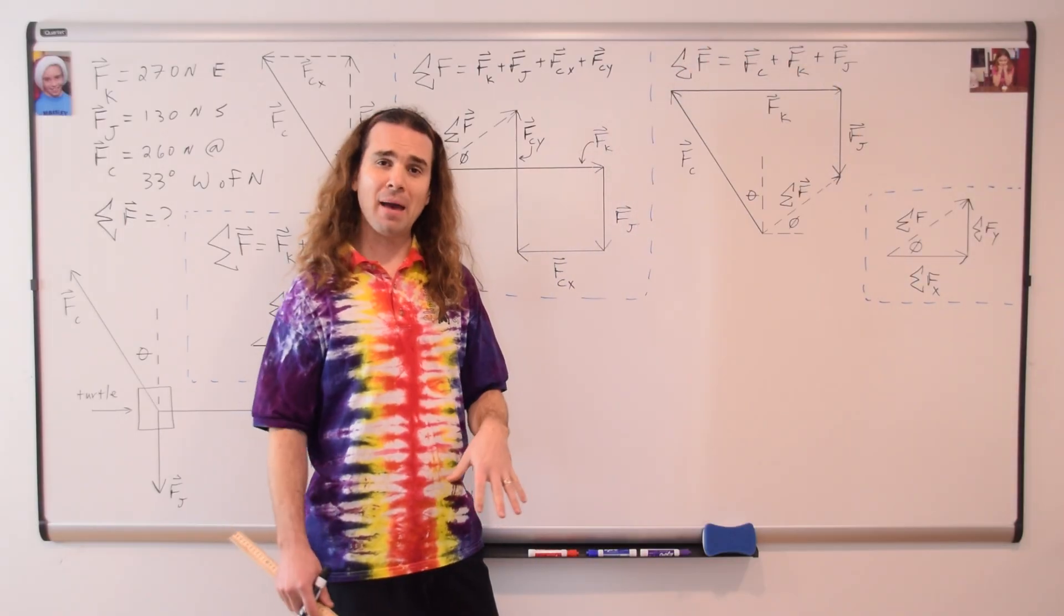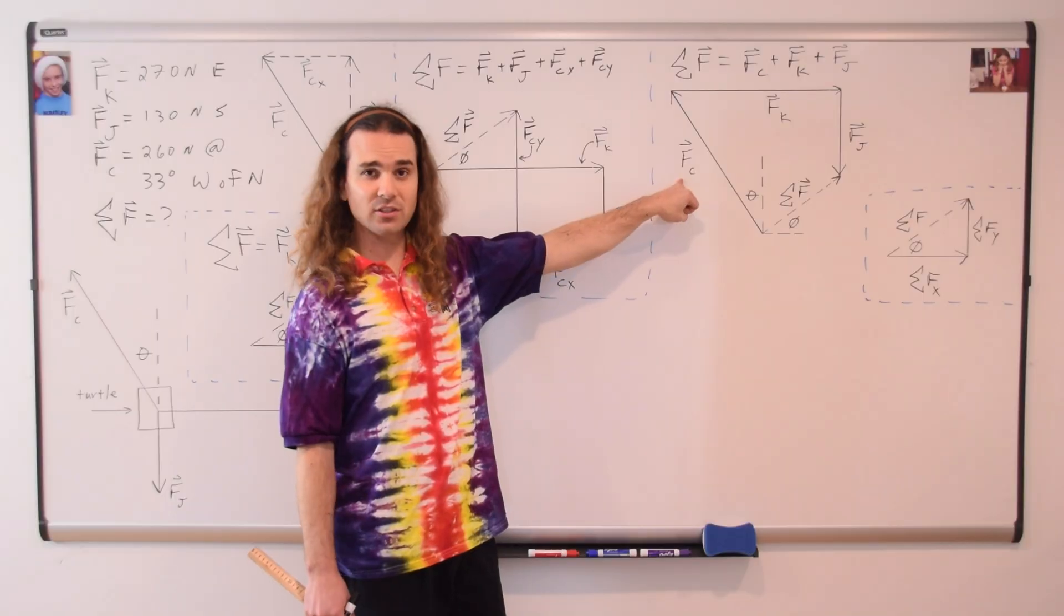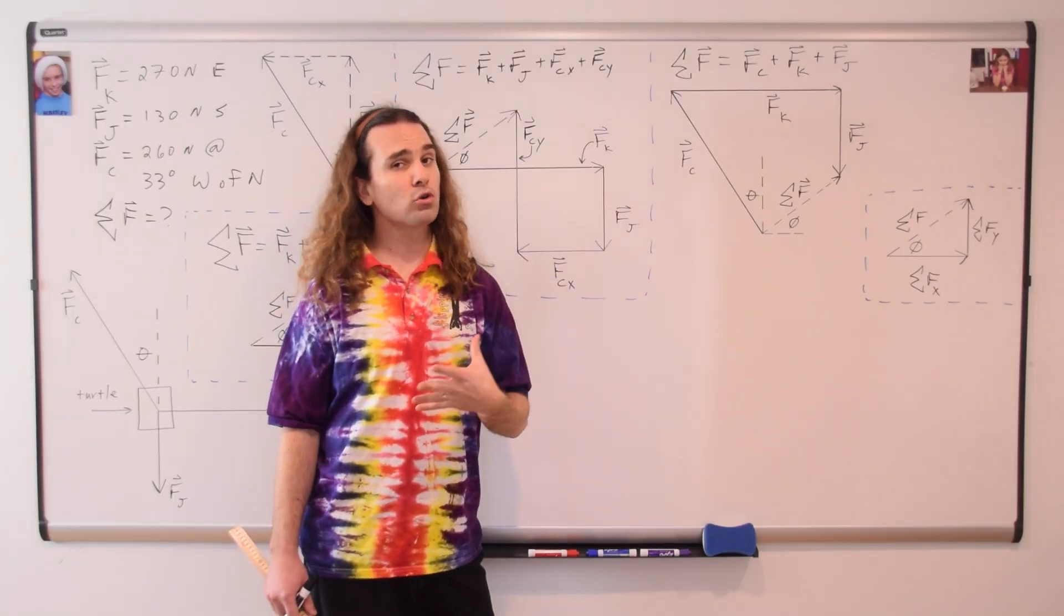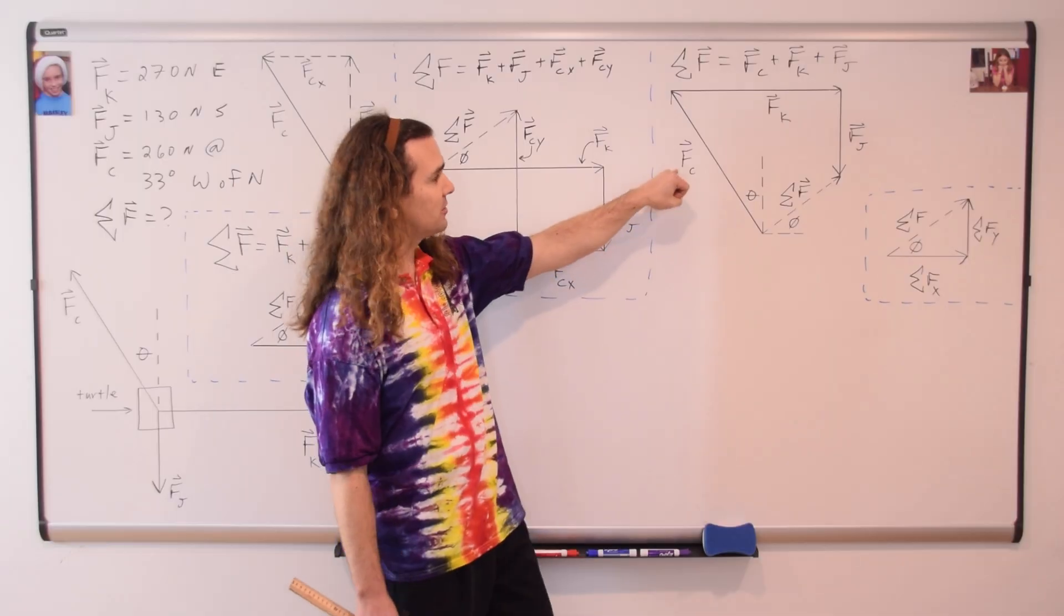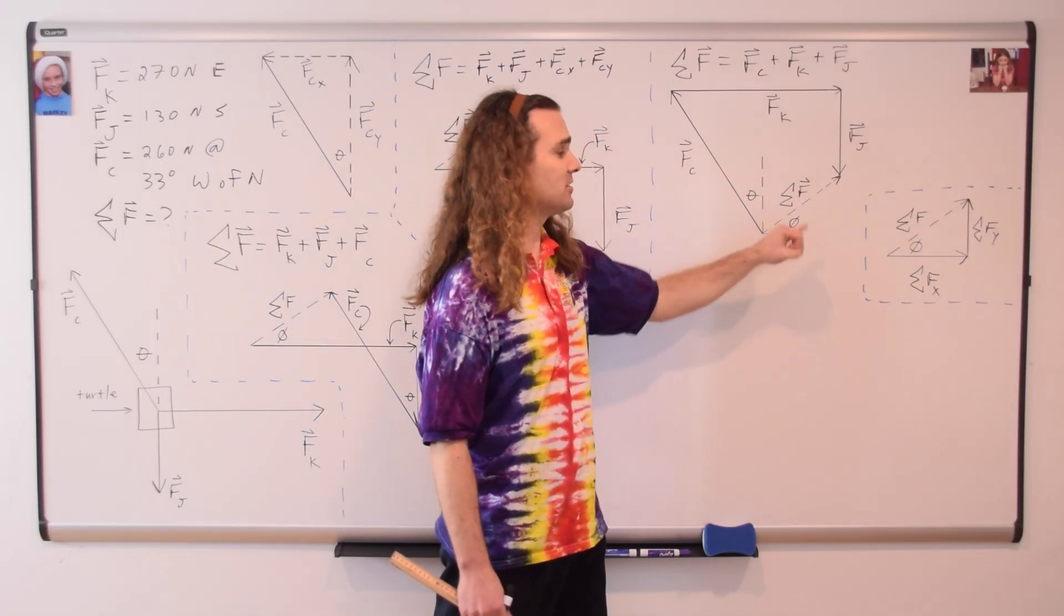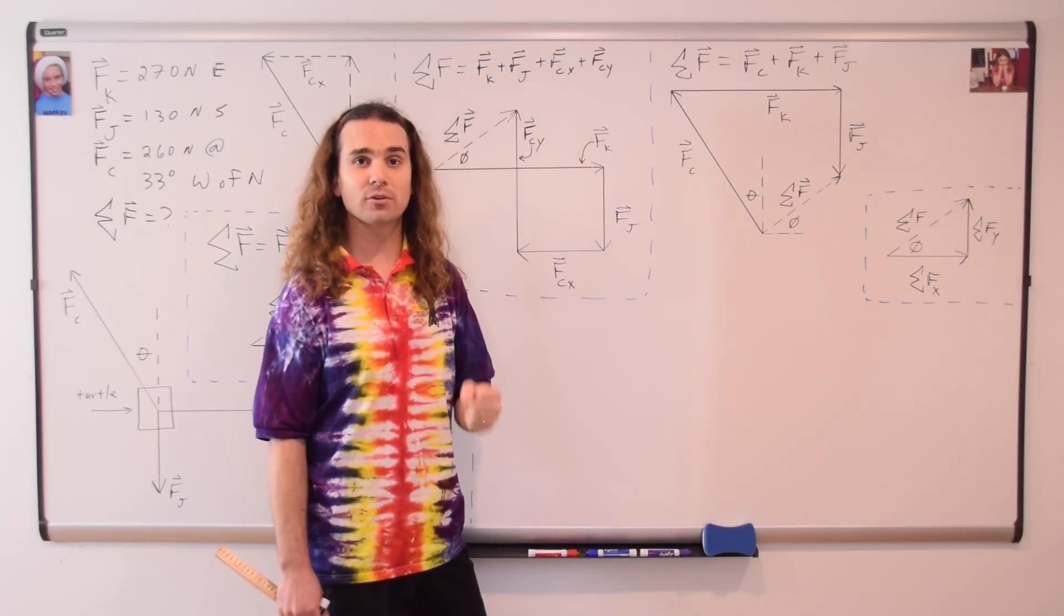Going back to using the force of Chris instead of its components, we can show that the order in which we add the vectors is irrelevant. So the force of Chris plus the force of Ken plus the force of Jim gives us the same net force.